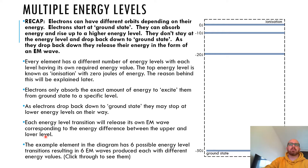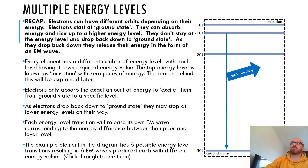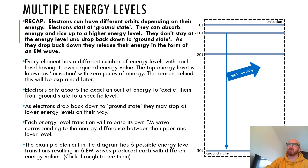The example element in the diagram has six possible energy level transitions, resulting in six electromagnetic waves produced, each with different energy values. So the first one, going from minus 10 to minus 50 joules, would release energy of 40 joules — because that's the difference between minus 10 and minus 50. So an EM wave would come off with 40 joules of energy. These numbers are massive — it would never be as big as this in reality, but just to give you an idea.